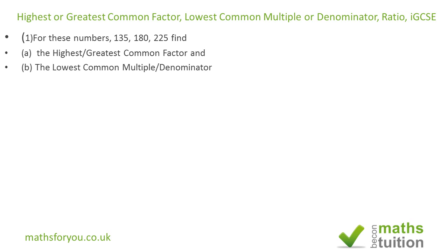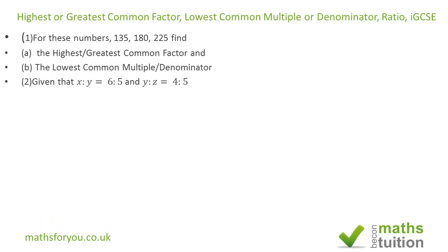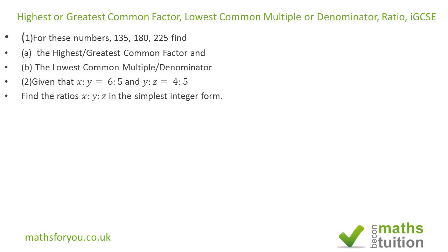The second question says: given that x to y is 6 to 5, and y to z is 4 to 5, we're supposed to find the ratio x to y to z in the simplest integer form — so we do not need any fractions at all in the ratios.